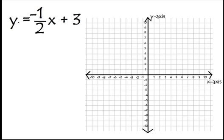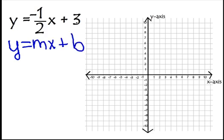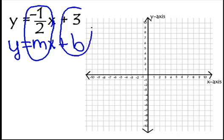Let's graph the equation y equals negative 1 half x plus 3 using the slope-intercept form. I always like to write that form y equals mx plus b right underneath the equation that I'm going to graph, because then I don't have to guess what my m is — my slope — or what my b is — my y-intercept.